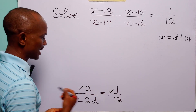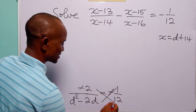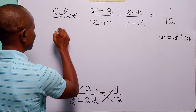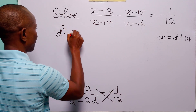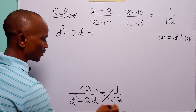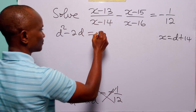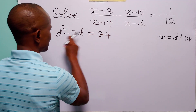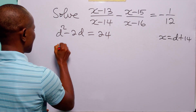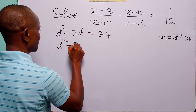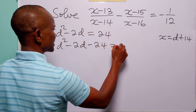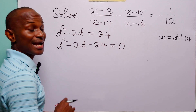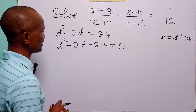Now if we multiply both sides of this equation by minus 1, that takes care of the sign, and now we can cross multiply. When we do that we have d squared minus 2d times 1 is equal to 12 times 2, which is 24. Let us rearrange this quadratic equation: d squared minus 2d minus 24 equals 0.